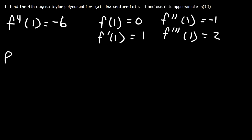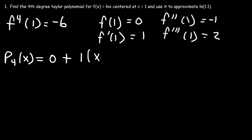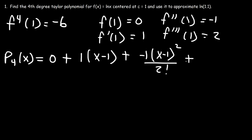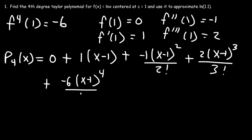Now let's write out the fourth degree polynomial. f(1) = 0, so that term drops. Then we have 1·(x - 1)/1! plus (-1)·(x - 1)²/2! plus 2·(x - 1)³/3! plus (-6)·(x - 1)⁴/4!.